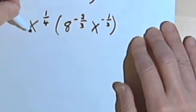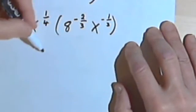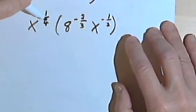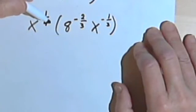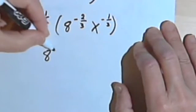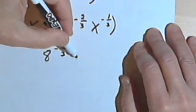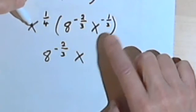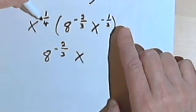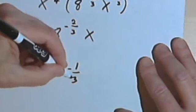Now it's time to multiply x to the one-quarter times this expression: 8 to the negative two-thirds, x to the negative one-third. Again, if you get confused, ask yourself what you would do if these were whole-number exponents — like x to the fourth times 8x to the third. We wouldn't touch the 8, so I'm just going to write down 8 to the negative two-thirds. Then I have to multiply x to the one-quarter times x to the negative one-third. If I multiply two similar bases, I have to add the exponents together, so I need to add one-quarter plus negative one-third.